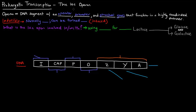The lac operon is an inducible system. Transcription of the genes involved in the lac operon is normally off, and it can be turned on, which means it can be induced.